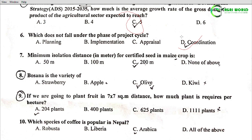Question 7: What is the minimum isolation distance in meters for certified seed in maize crop? Options: 50 meter, 100 meter, 200 meter, none of the above. The correct answer is Option C: 200 meter.